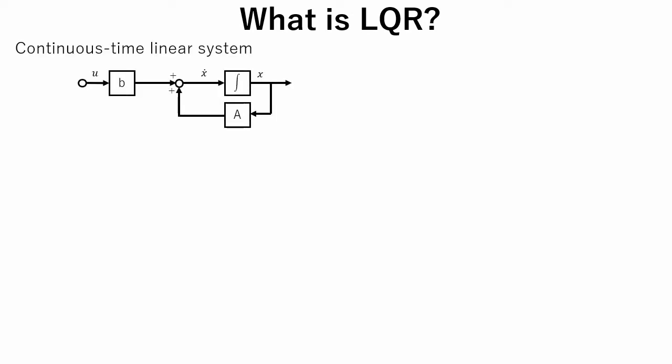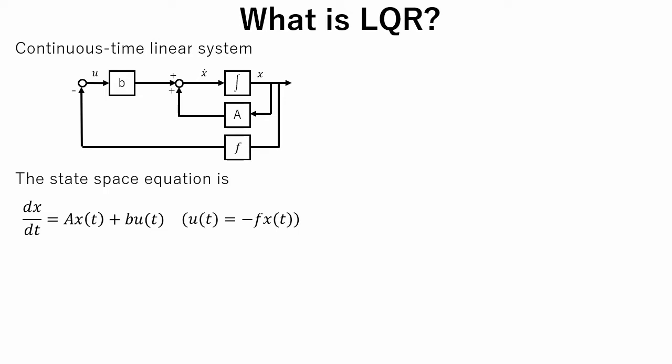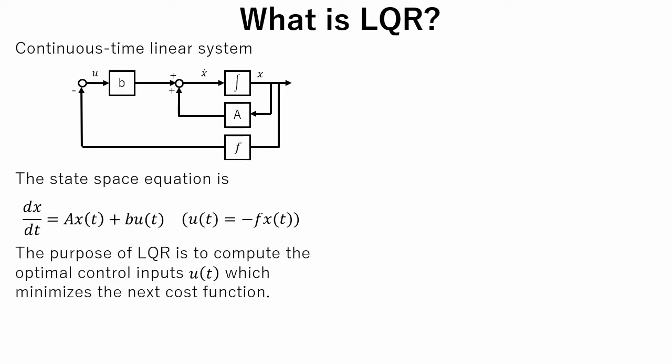Let's assume that we have a continuous time linear system. The state-space equation is described like this. Now we define the feedback gain F. The purpose of LQR is to compute the optimal control input uT, that is the feedback gain F which minimizes the next cost function.